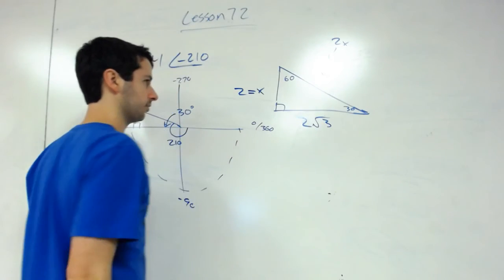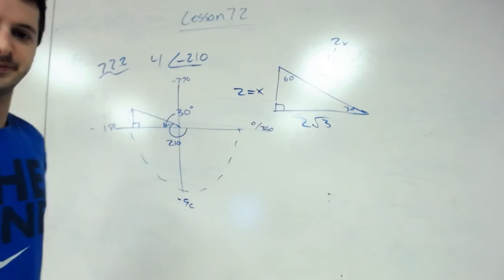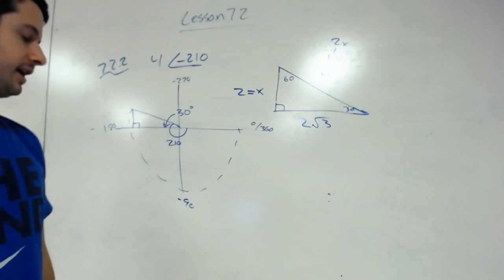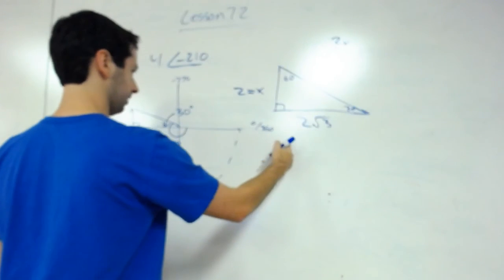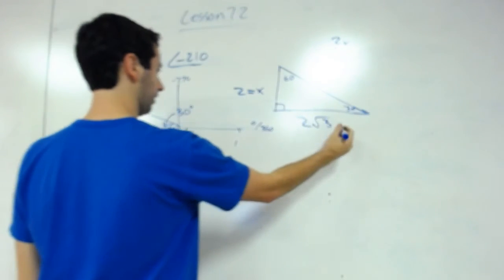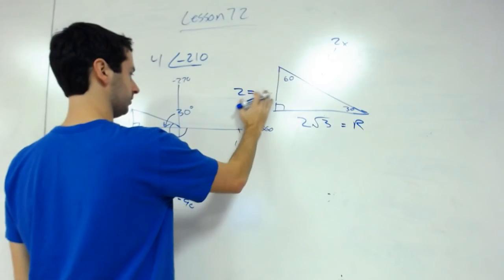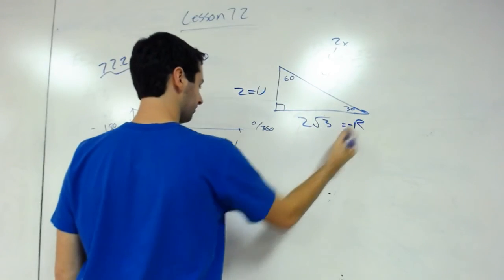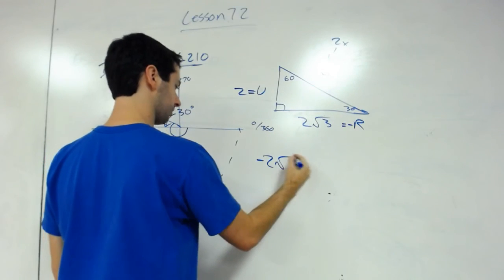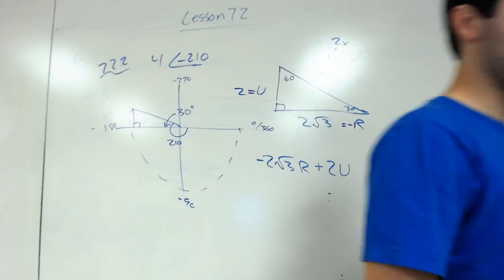2 radical 3. I know there's a glare there, but that's 4. And then we write our answer as - this is r and u. It does go up and it is a negative r, so we write negative 2 radical 3 r plus 2u.